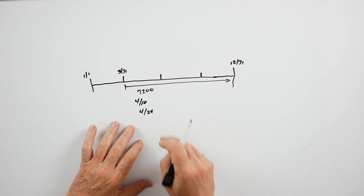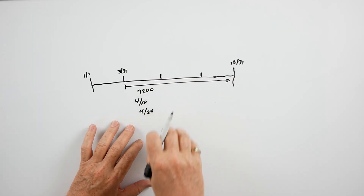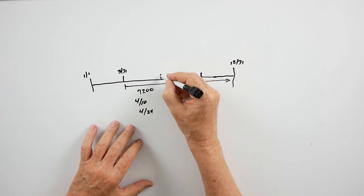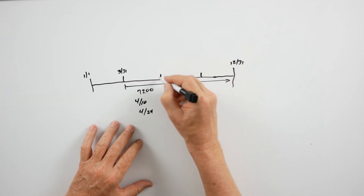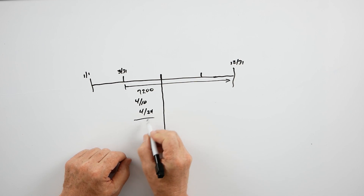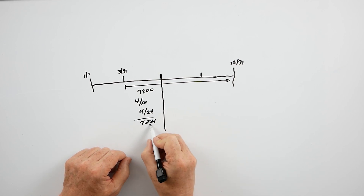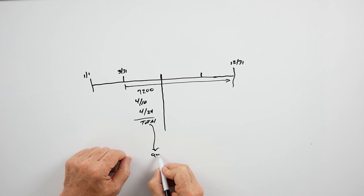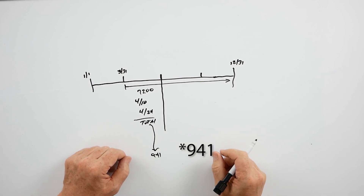On the Form 7200, each time you fill one out you mark whether it's the first, second, or third quarter. Whenever we get to the end of the quarter, we're going to take the total of these 7200s and put them on a 941 to reconcile. That reconciliation happens each quarter.